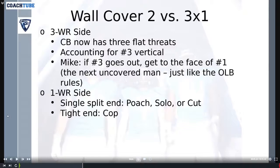When we talk about playing Cover 2 wall versus 3x1 formations, there are a couple things to think about. The corner now has three flat threats to his side. Like we talked about in part one, he only plays flat threats from a receiver or tight end position, not from the backfield. By definition, a 3x1 formation will give him three flat threats, so he has one extra guy in his field of vision. You also need to account for number three vertical.